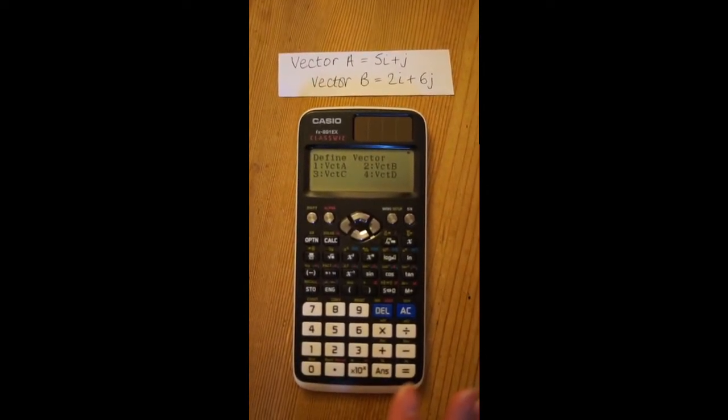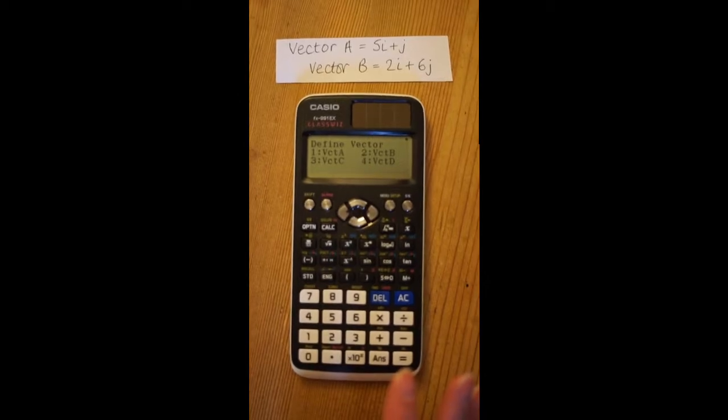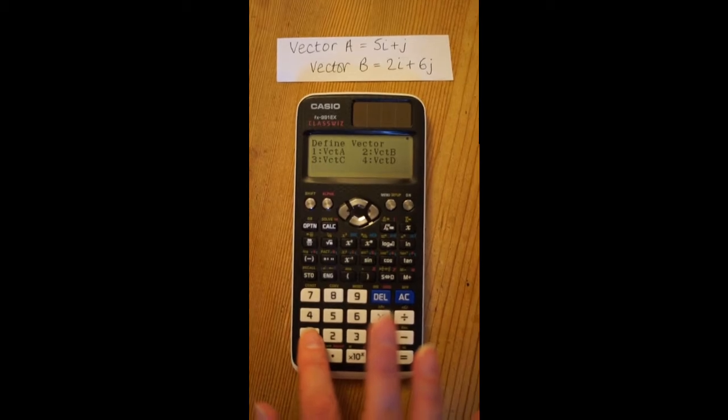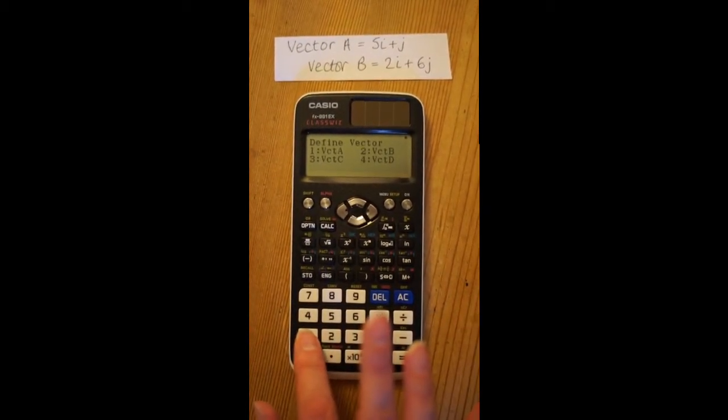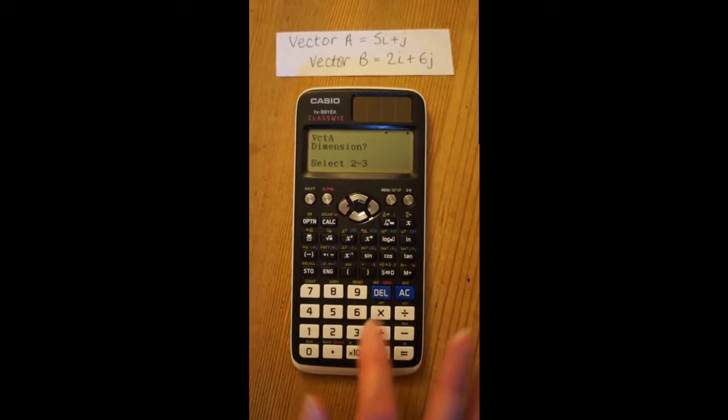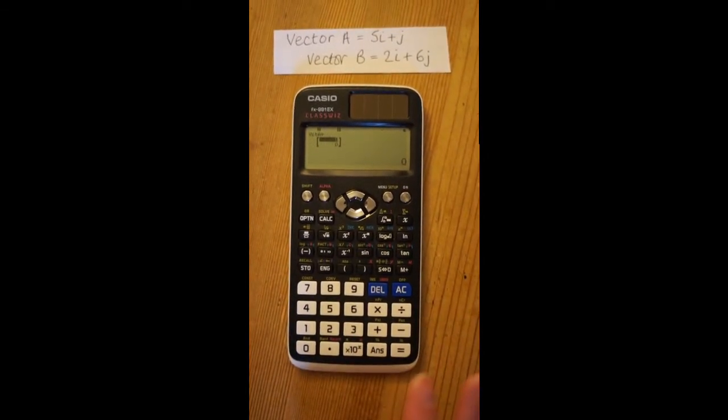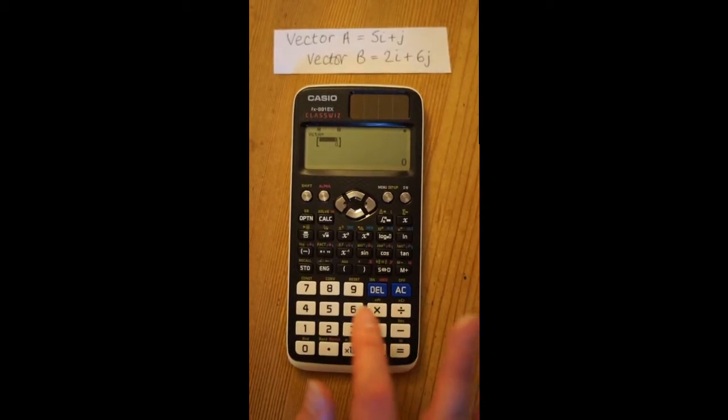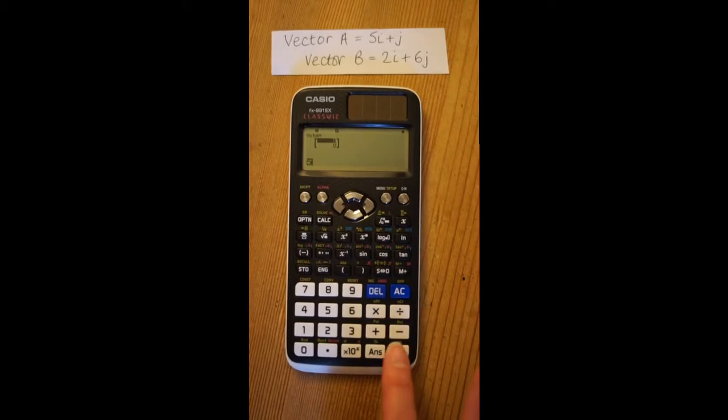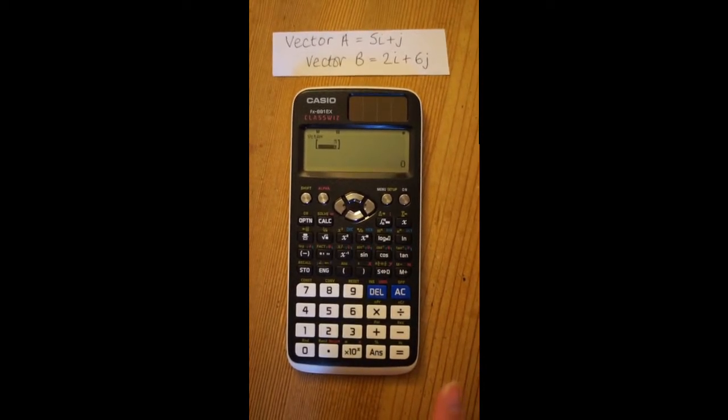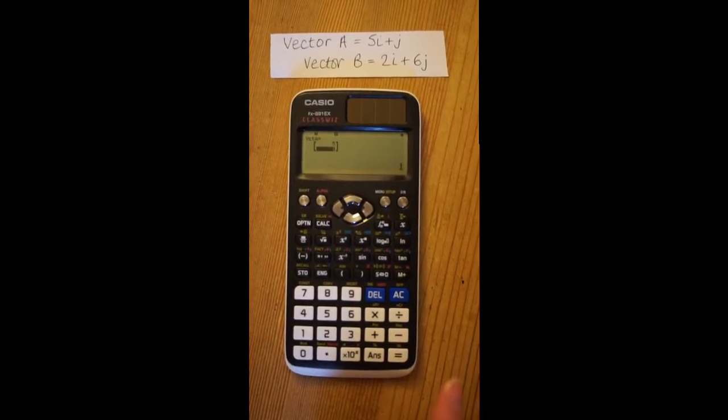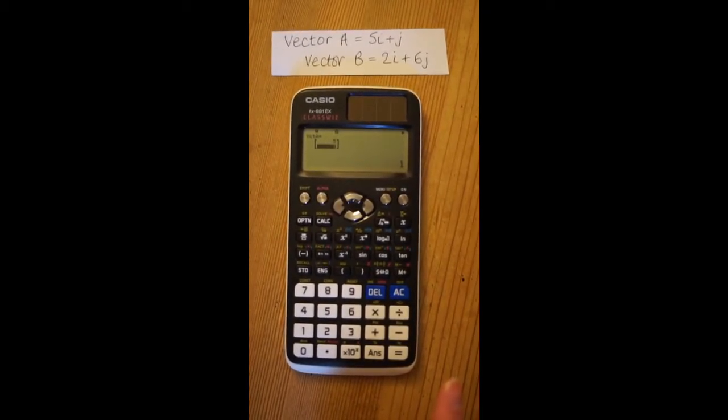Now we need to enter vector A and vector B. To do that, press 1, select 2 because we're working in two dimensions, press 5 to enter the i coefficient, then equals, then press 1 to enter the j coefficient, then press equals. So that's vector A entered.